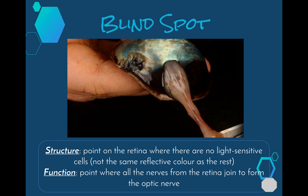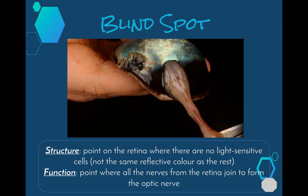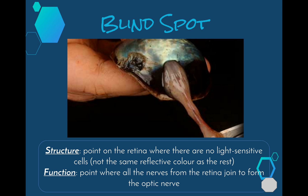That brings us to the end of this video. We still need to look at a few other accessory parts of the eye, such as tear ducts and some other muscles, and then we'll have a look at doing the eye dissection where you'll actually get your hands on a bull's eye and be able to see these structures yourself.